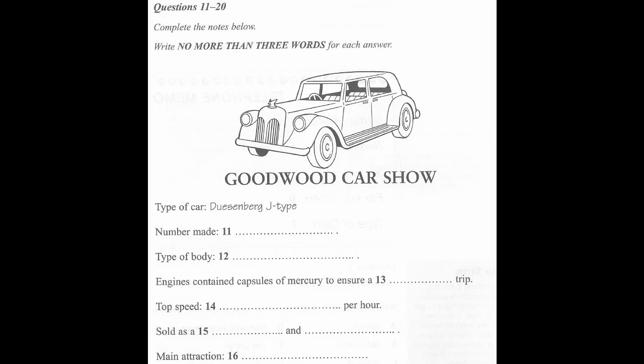As you listen to the first part of the talk, answer questions 11 to 16. The Goodwood Museum is currently celebrating some of the most extravagant types of car design in its festival of speed. Here's our reporter, Vincent Freed, who's on site to tell us about some of the cars on display. Well, here I am, standing in front of one of the most prestigious cars ever built, the Duesenberg. A fantastically expensive, luxurious car built in the early part of the 20th century and bearing all the glamorous qualities of the Jazz Age.